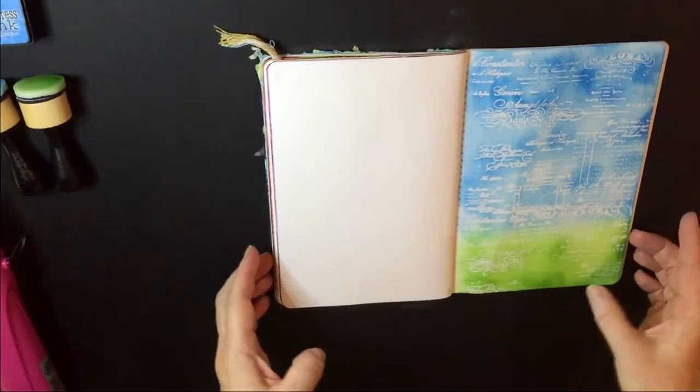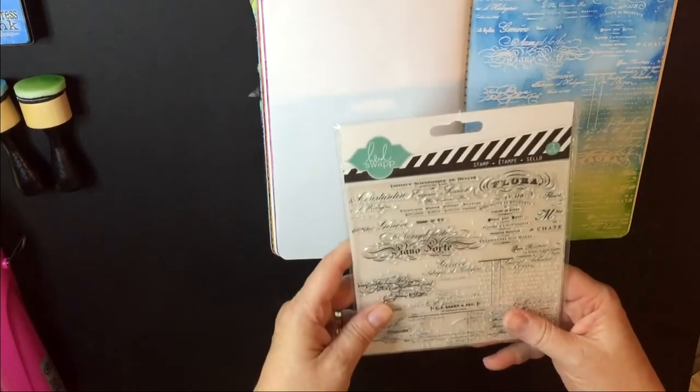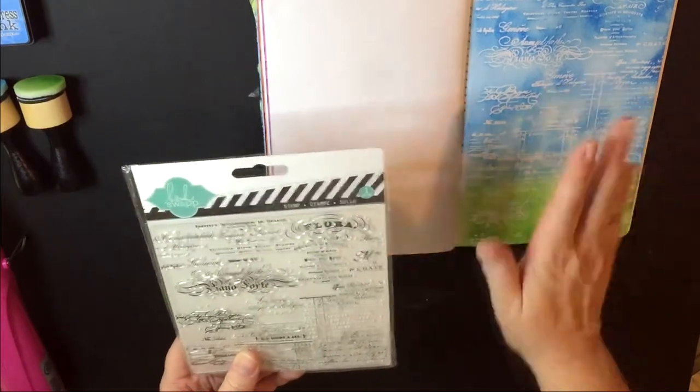In other words, because I'm using a background stamp - this is a Heidi Swapp background stamp and you can see it's on this side here. I've already done this side.